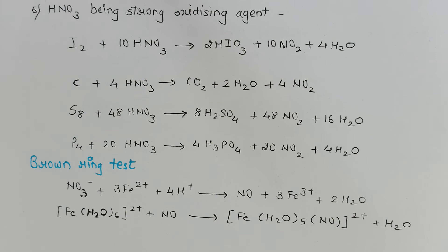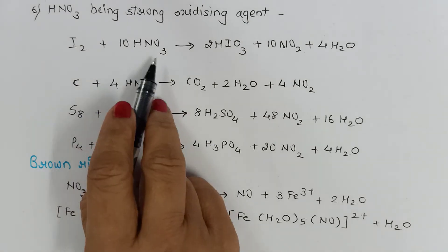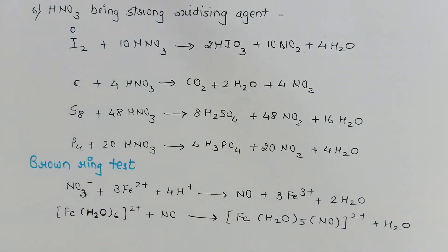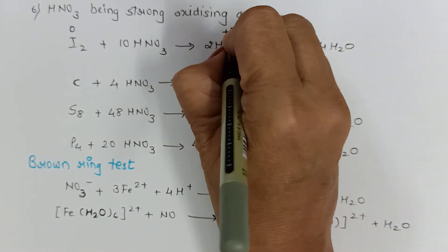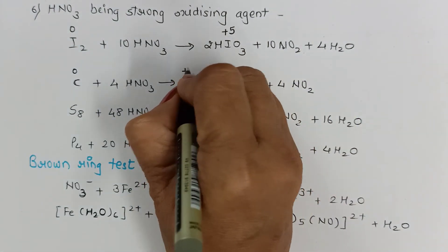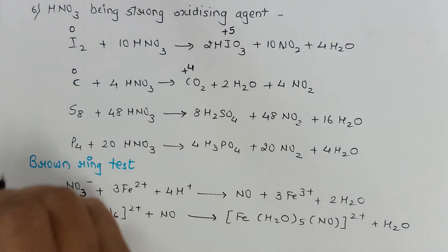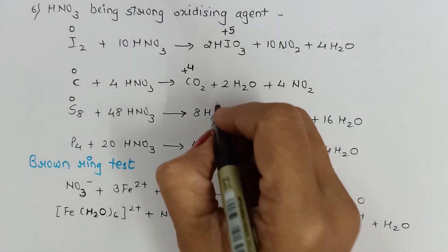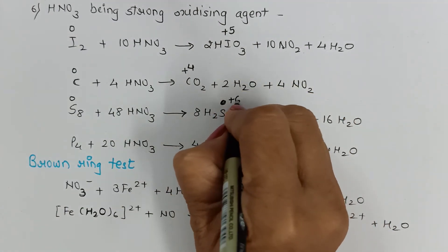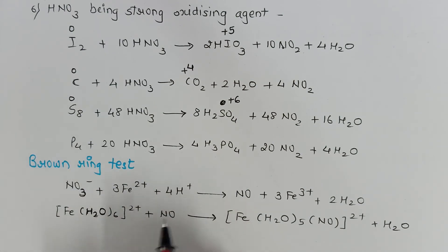Since nitric acid acts as a strong oxidizing agent, there are more reactions to study. Nitric acid oxidizes iodine to iodic acid (HIO3), with iodine's oxidation state going from 0 to +5. Nitric acid also oxidizes carbon to CO2, and oxidizes sulfur to sulfuric acid (H2SO4, where sulfur's oxidation state is +6).